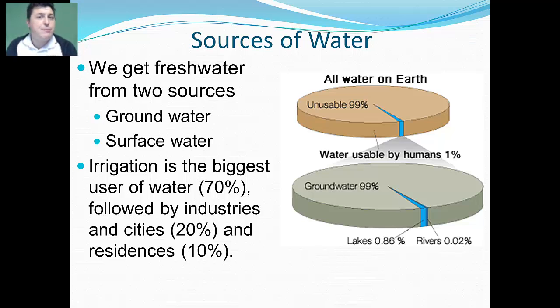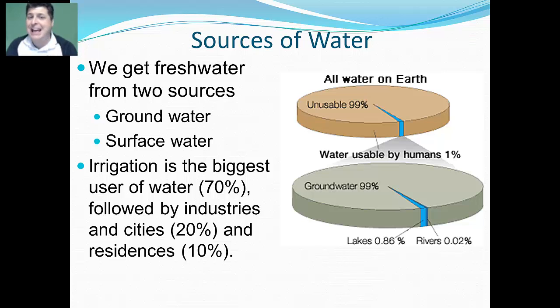We use the bulk of our water in agriculture. 70% of all water that we use is used for irrigation, followed by industries and cities at 20%. Residential use is only about 10%.